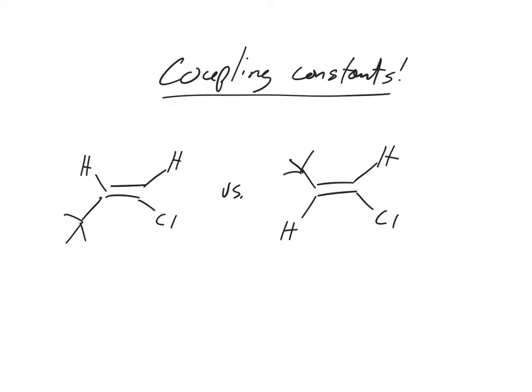They're important for one example that's really important: when you have a cis or trans alkene. So you have a cis alkene versus a trans alkene.